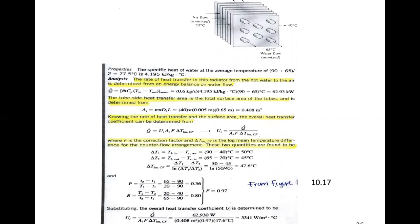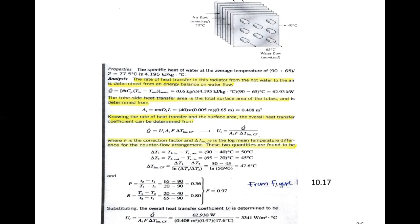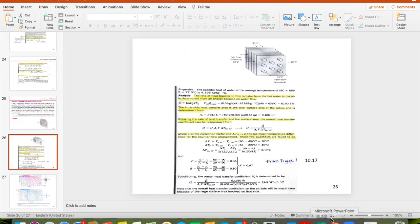Now we have everything: ΔT_lm, correction factor F = 0.97, area A_i, and heat transfer rate Q. We calculate the overall heat transfer coefficient based on the inner area: U_i = Q / (A_i · F · ΔT_lm) = 3341 W/m²·°C. As a note, the overall heat transfer coefficient on the outer side will be much lower due to the large surface area on that side, but we are adding fins to compensate. That concludes the LMTD method.